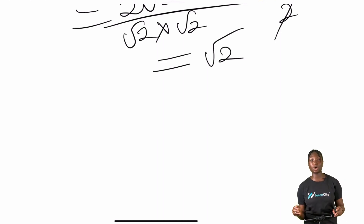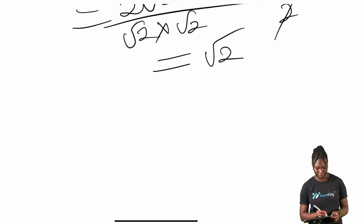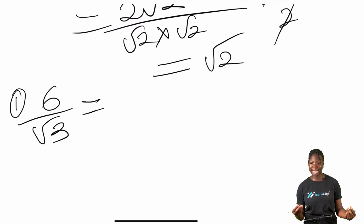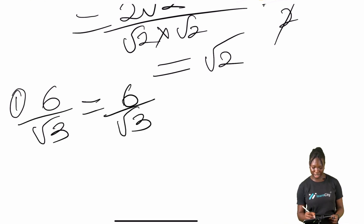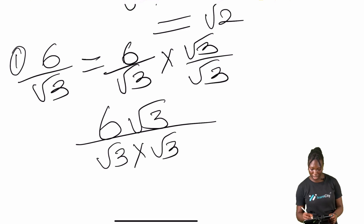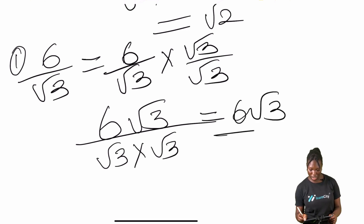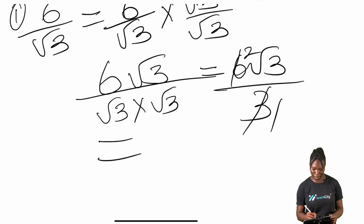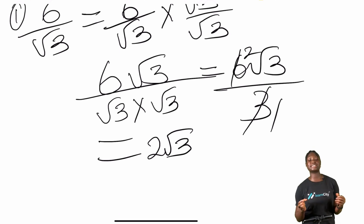Moving to division of surds, our first example is six over root three. We rationalize the surd: six over root three times root three over root three gives us six root three over three. Simplifying, three divided into six gives two, so we have two root three. Therefore, six divided by root three gives us two root three.